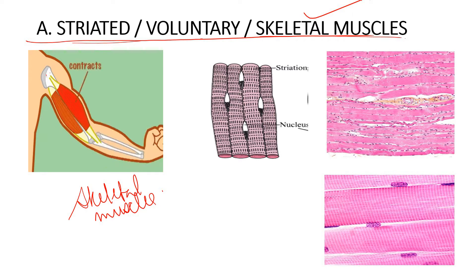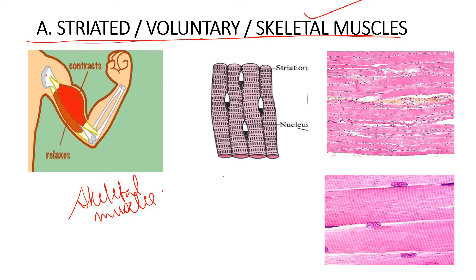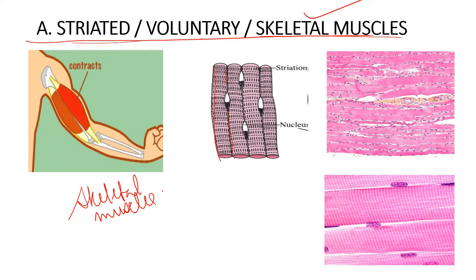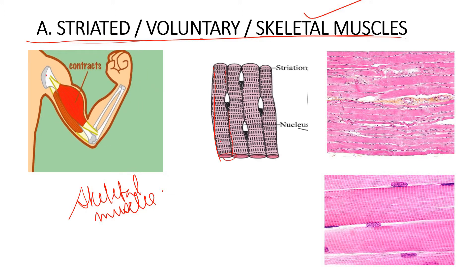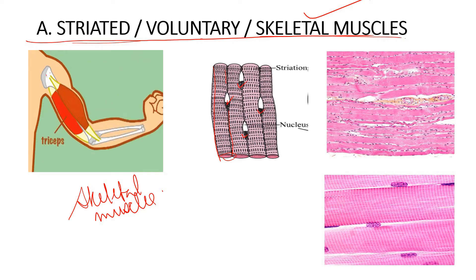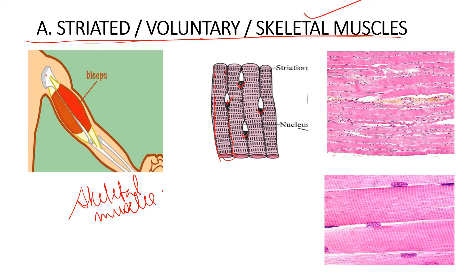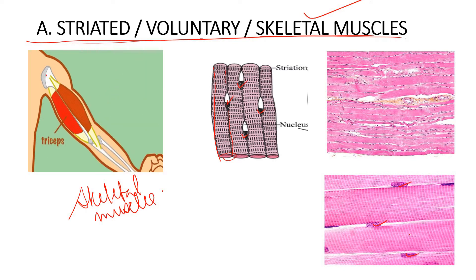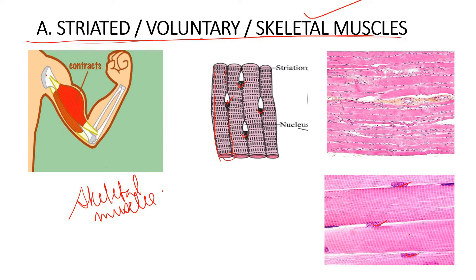Looking at the structure of skeletal muscles, they are long and cylindrical in shape. They also have multiple nuclei — you can see the small purple dots representing the nucleus — many nuclei are present in each cell.